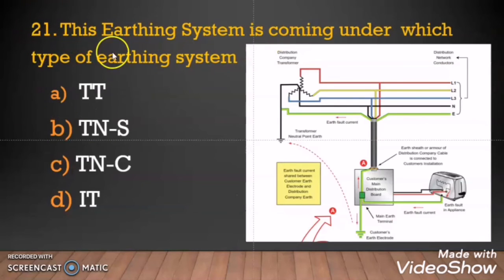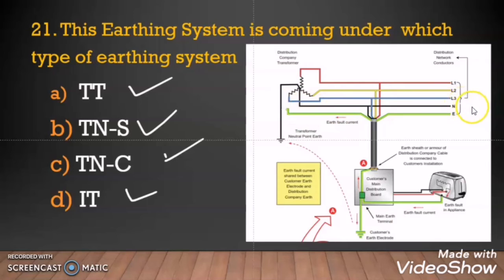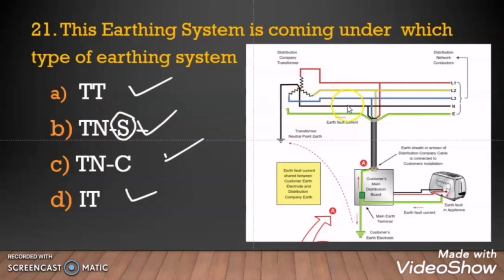Question 21: This earthing system is coming under which type — TT, TNS, TNC, or IT? In this system there is one earth conductor separate from the neutral conductor, meaning neutral and earth are separate from each other. S stands for separate, N stands for neutral, and T stands for terra meaning earth. Since the earth conductor and neutral conductor are separate, this is a TNS system. If the neutral and earth were one conductor, it would be a TNC system.